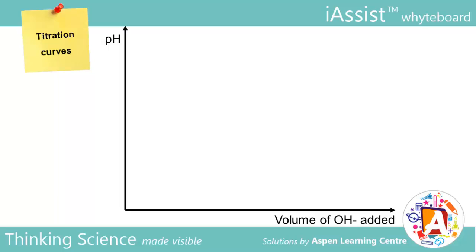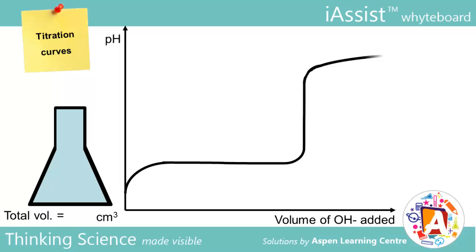Let us take a look at a pH against volume of NaOH added graph, or what we call a titration curve. The flask on the left tracks the changes in the total volume of the solution in the flask as the reaction proceeds.